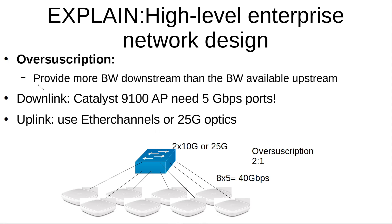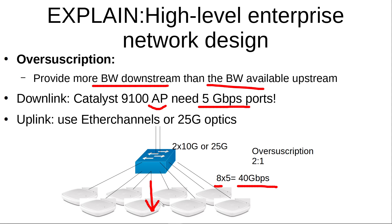Over-subscription happens when you need to provide more bandwidth downstream than the bandwidth available upstream. For example, using the Catalyst 9100 access points which need five-gigabit-per-second ports, if you connect eight of these access points, you need 40 gigabits per second downstream. You can use ether channels or 25-gigabit-per-second interfaces to address this. Always aim for an over-subscription ratio of two-to-one, three-to-one, or four-to-one — but if you reach ten-to-one, you are designing it wrong.